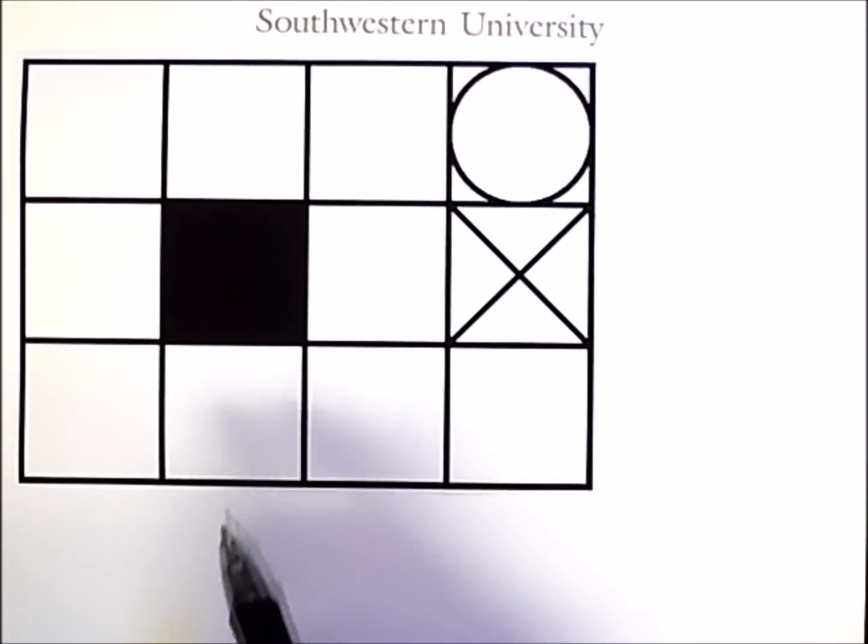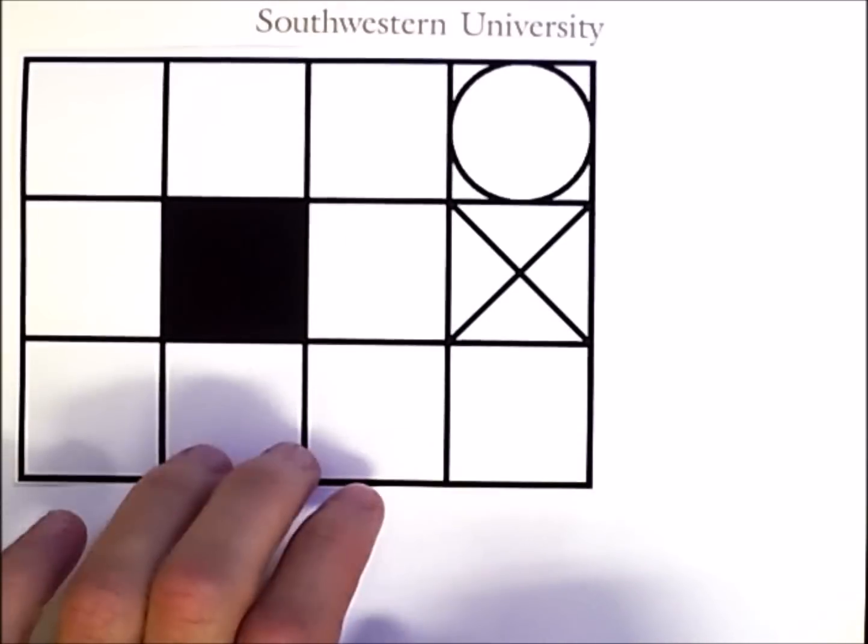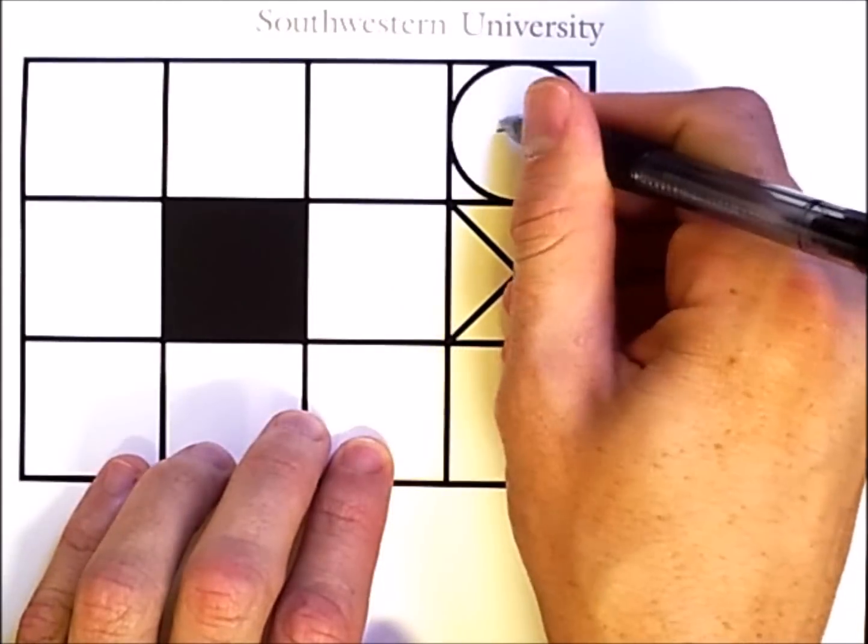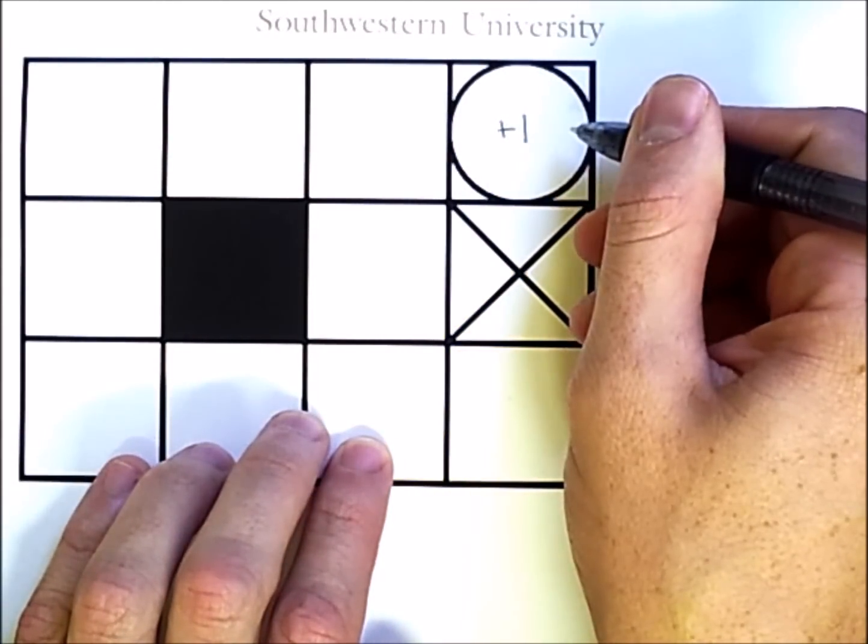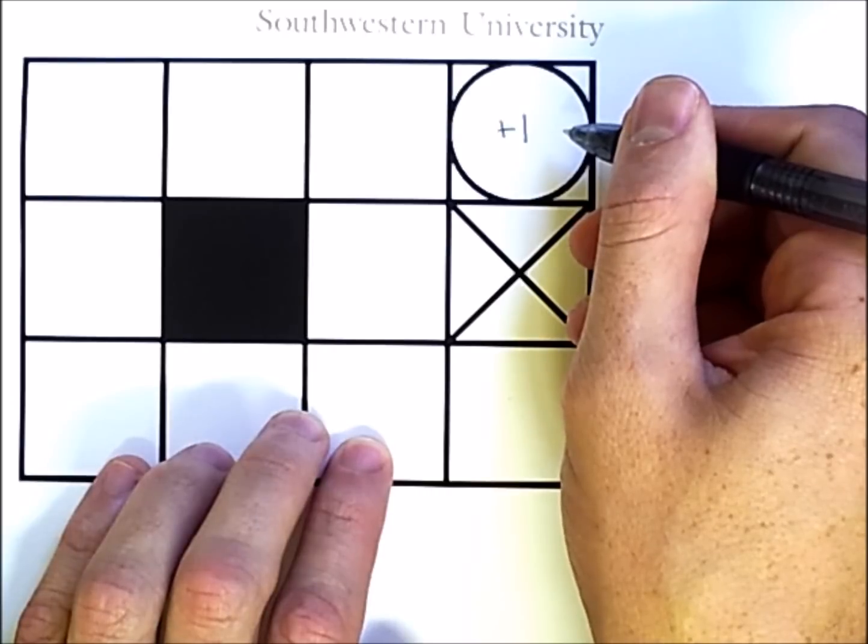In this simple grid world, an agent will receive a reward of plus 1 if it enters this space with a circle in it, and after that, the evaluation will immediately end.